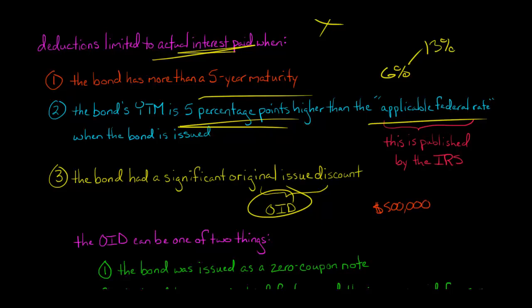We promise to pay the investor $500,000 in six, seven years from now, something like that. And right now, you only have to give us $100,000. So you give us $100,000 and in six, seven years we'll give you $500,000. And so there's no interest paid along the way. That's why it's called a zero coupon note.